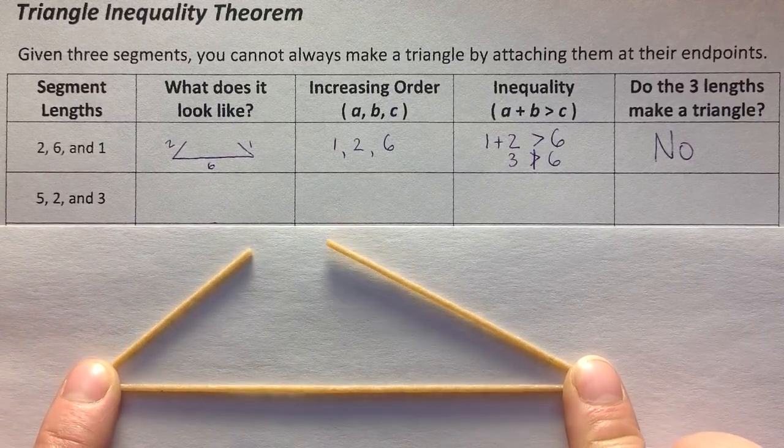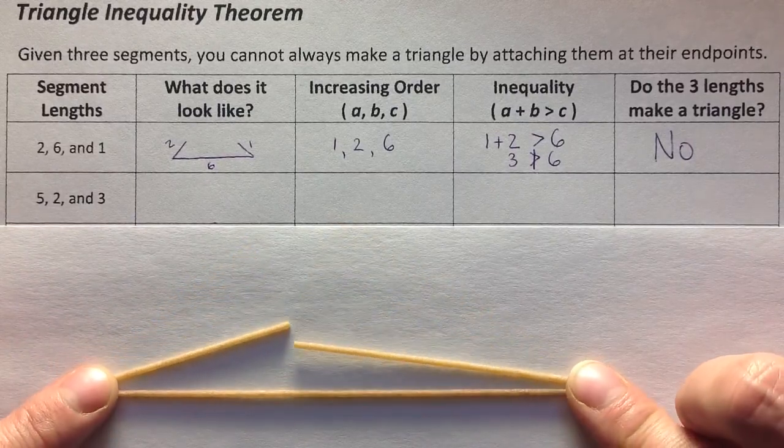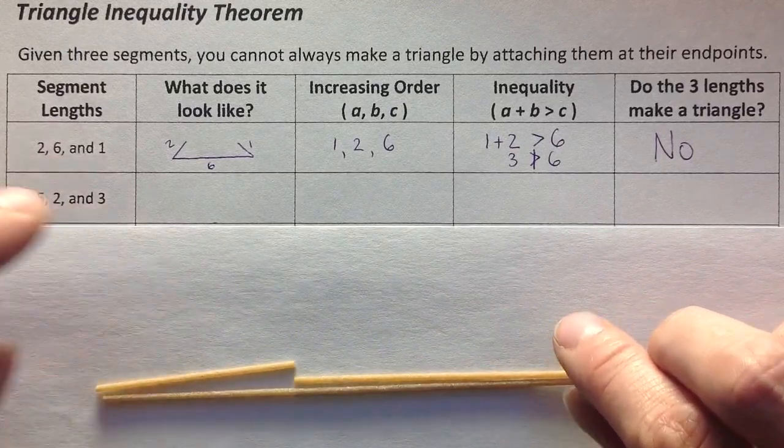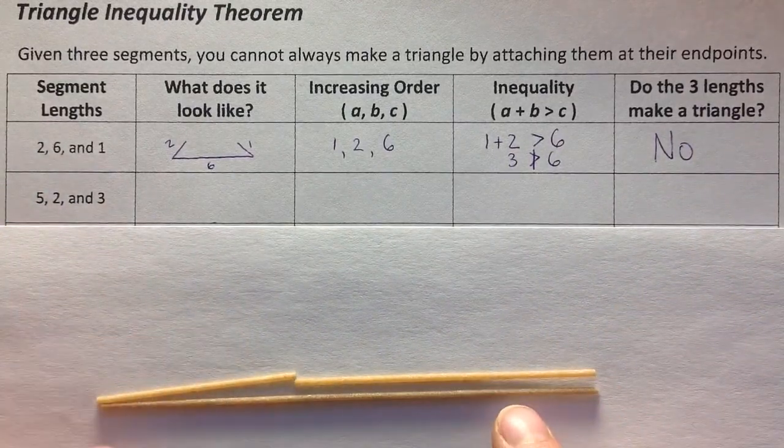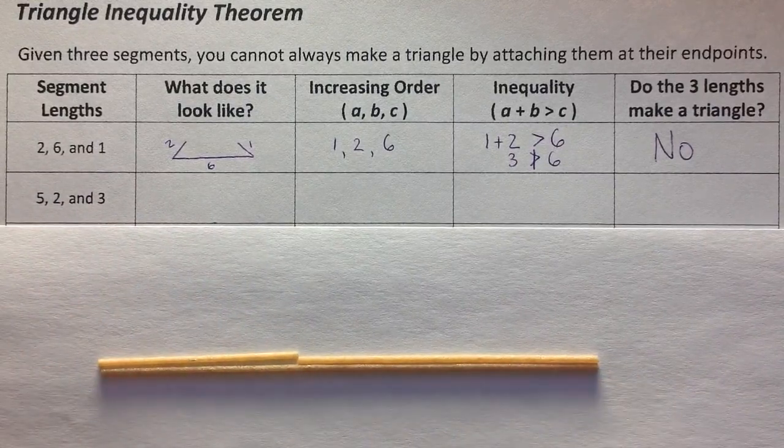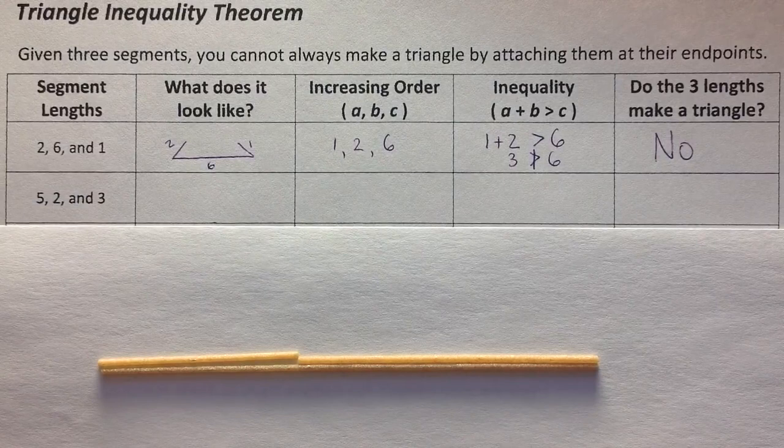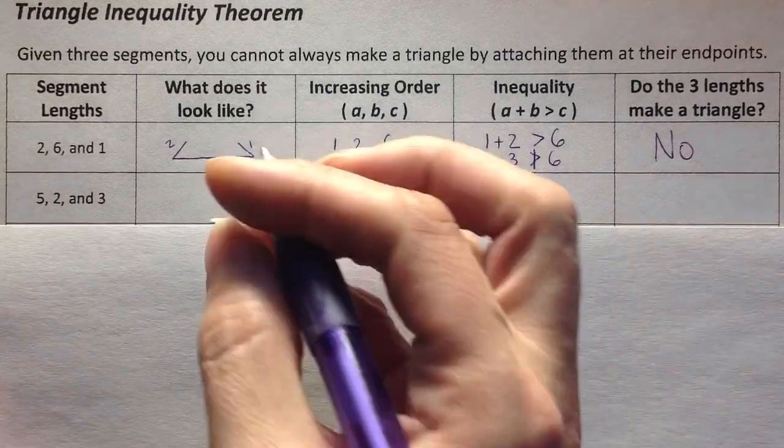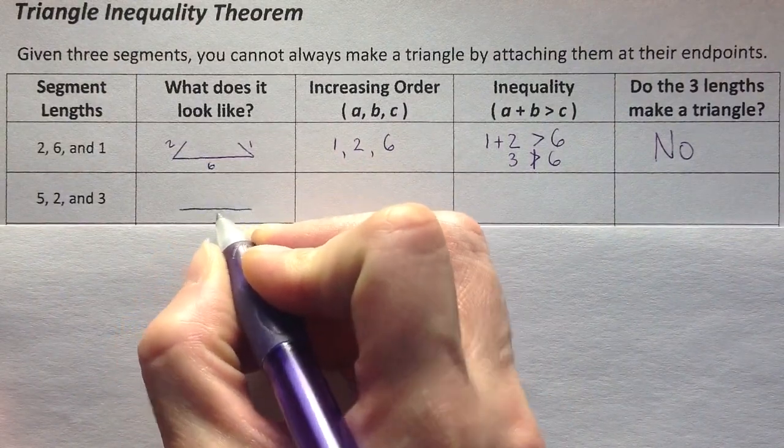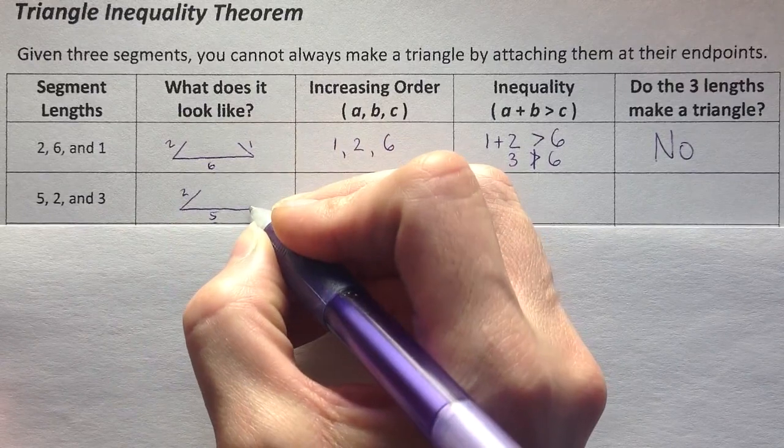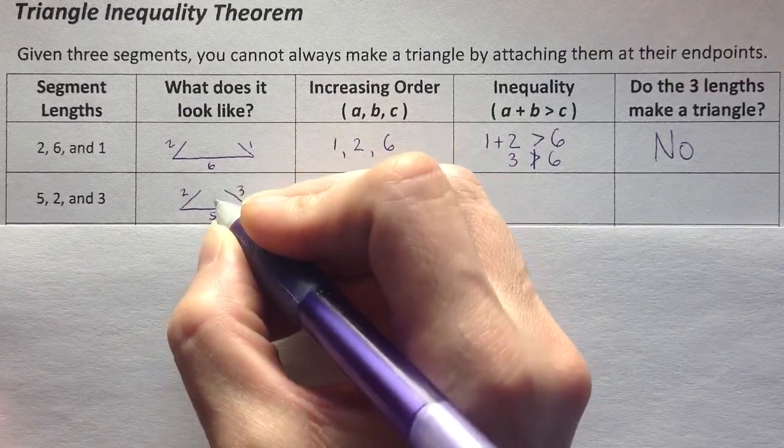Are they going to reach? Well, if I put these down so they can reach, they actually do touch, but not until they're exactly flat. There's not going to be enough space here to create a triangle. So if you take your longest one, lay it down. If you attach your two shorter sides, 2 and 3, will they meet?